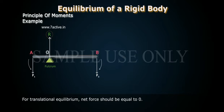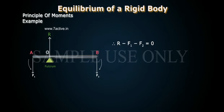For translational equilibrium, net force should be equal to zero. Therefore, R minus F1 minus F2 is equal to zero. R is equal to F1 plus F2, equation one.